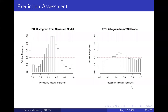Based on the estimated parameters, we estimate the distribution function of the random field at each testing location for both the Gaussian model and the 2KGH model. Applying the probability integral transformation (PIT) to testing location values based on the estimated distribution functions should yield observations from a Uniform(0,1) distribution if the distribution functions are correctly estimated. The PIT histograms suggest that the 2KGH fit is much more preferable for this dataset compared to the Gaussian fit.